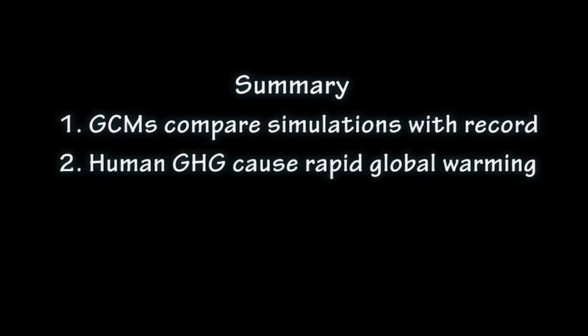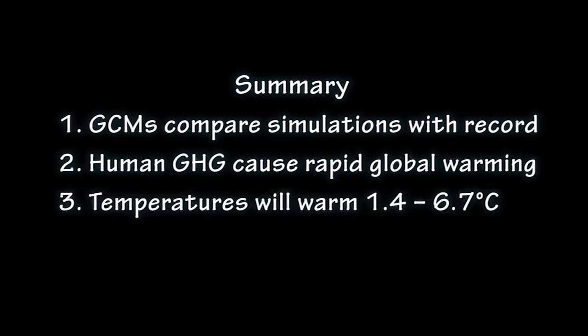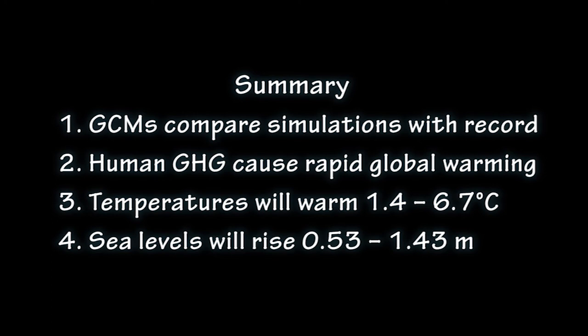In summary: number one, global climate models are tested by comparing their simulations of past climates with the actual climate record. Number two, global climate models affirm that human-generated greenhouse gases have been the major cause of rapid global warming observed during the last few decades. Number three, according to the global climate models, average global temperatures will warm somewhere between 1.4 and 6.7 degrees Celsius from 1975 to 2100, depending on human activities. Number four, average sea levels in 2100 will be between 0.53 and 1.43 meters higher than in 1975.